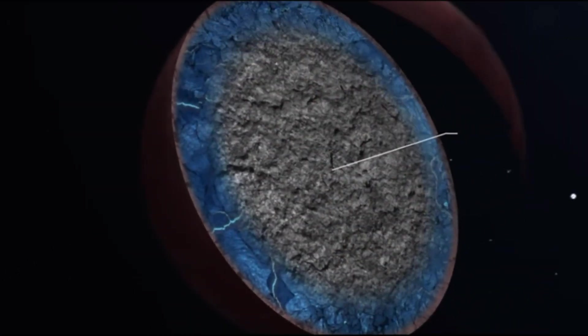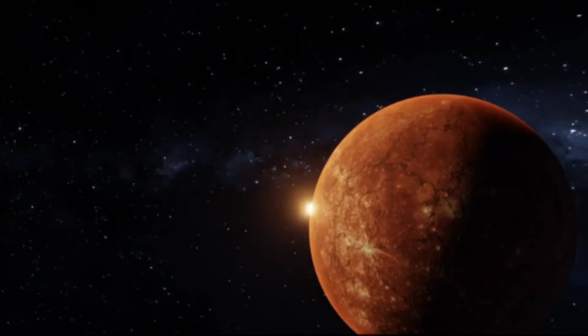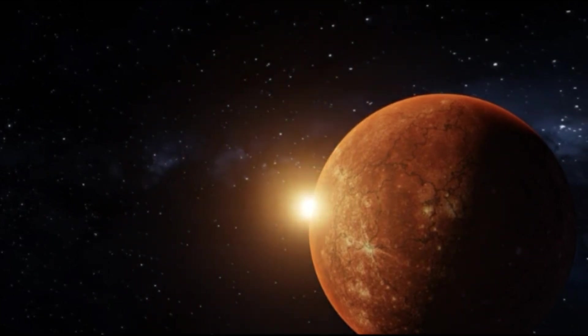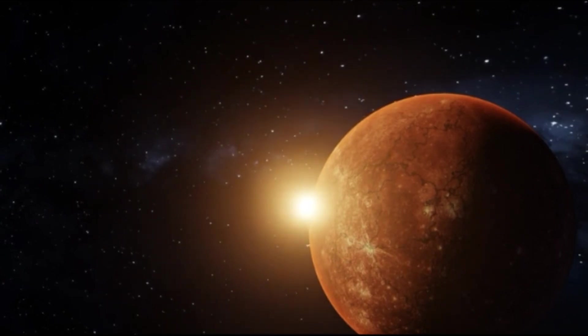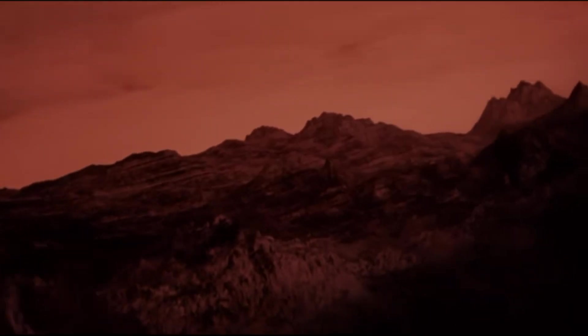According to which, a planet must have sufficient mass to give itself a spherical shape, orbit the sun, and have a cleared orbit, meaning it must be massive enough to attract or repel other objects in its orbital zone. Pluto does not meet the latter condition due to its location in the Kuiper Belt, where many objects of comparable sizes exist.